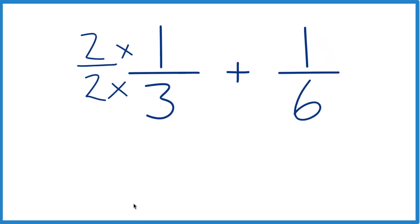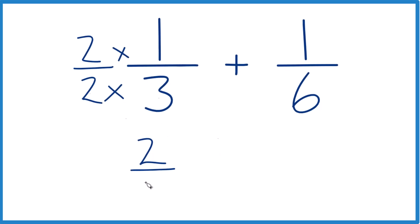So now we have 2 times 1, that's 2, and 2 times 3, that equals 6. And 2/6, that's the same thing as 1/3. They're equivalent fractions.